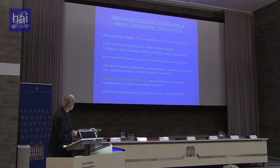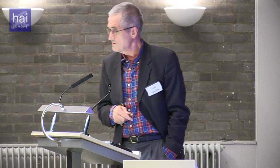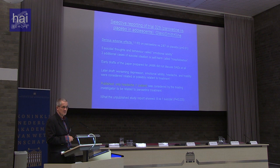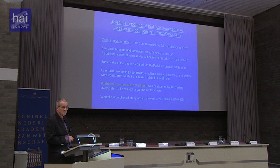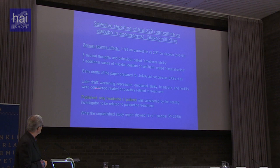Here it becomes very bad, because there were 11 serious adverse effects on paroxetine versus two on placebo — this is statistically significant. Five of these children became suicidal, but this was relabeled as 'emotional lability.' Three additional cases of suicidal ideation or self-harm were called 'admission to hospital' without explanation. Early drafts of the paper prepared for JAMA did not contain a single serious adverse event at all.